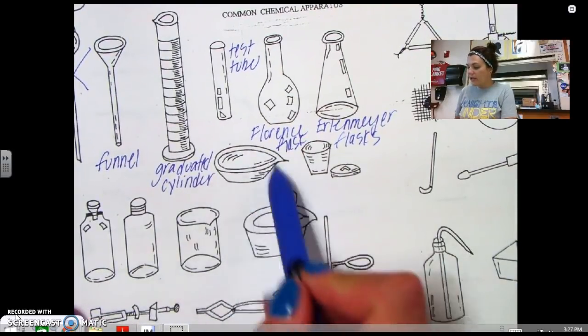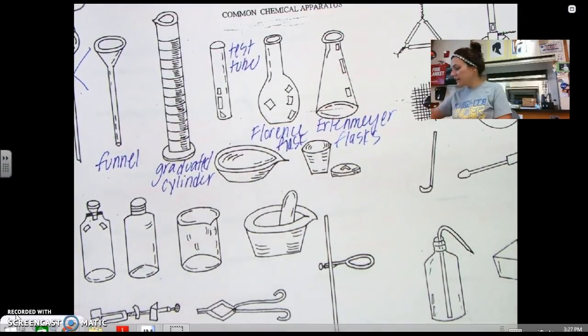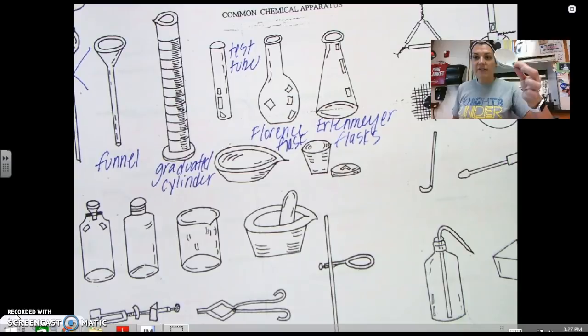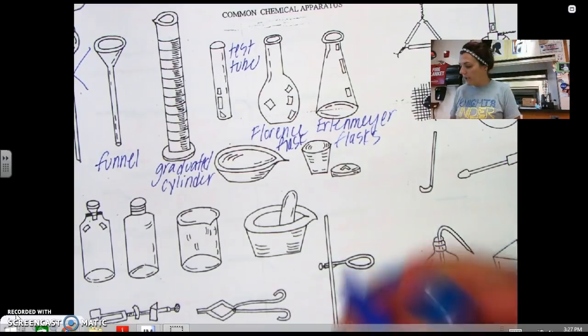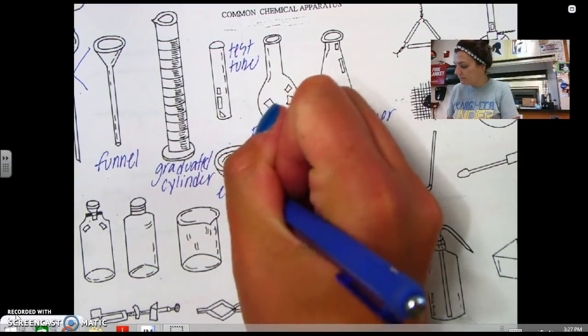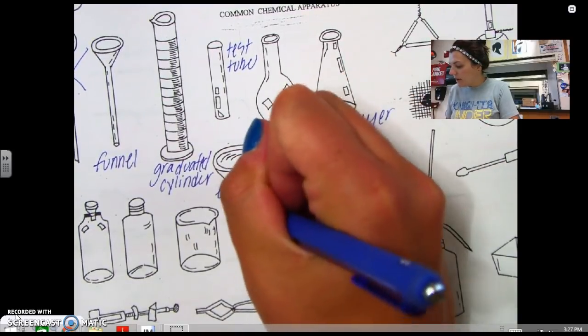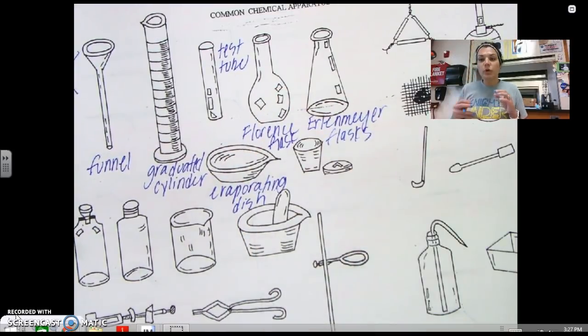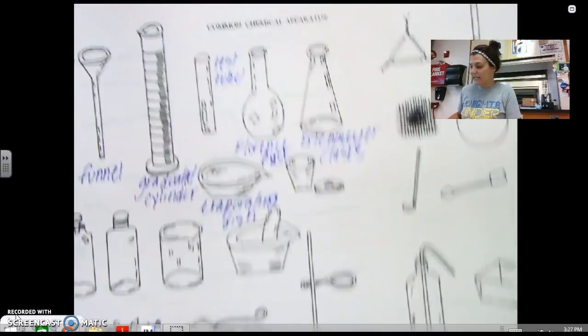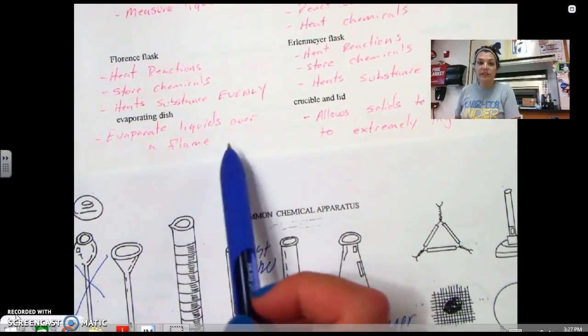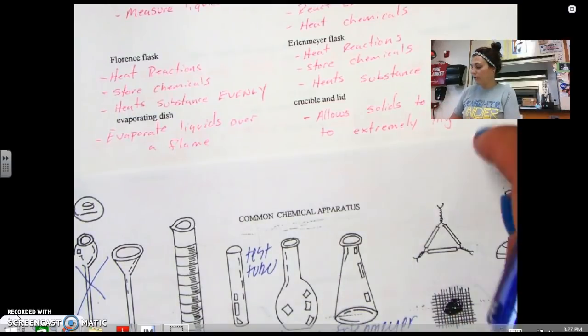The next guy that we have right here, this is called an evaporating dish. And you can kind of tell that it's kind of made out of ceramic. It's called an evaporating dish. And what we use an evaporating dish for is if we're needing to heat something to higher temperatures than what glass can handle. So an evaporating dish allows us to evaporate liquids over a flame.